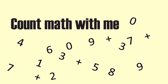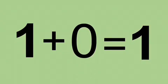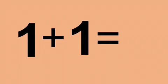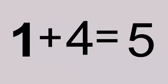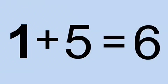Count math with me. One plus zero equals one. One plus one equals two. One plus two equals three. One plus three equals four. One plus four equals five. One plus five equals six. One plus six equals seven.